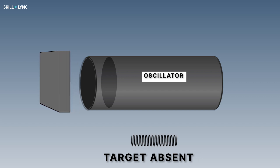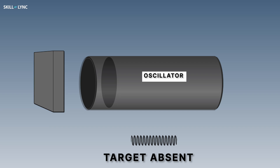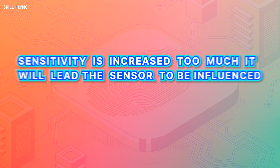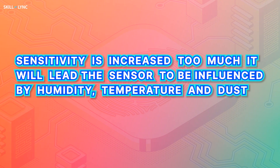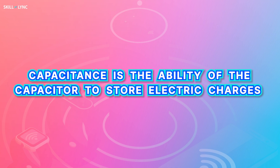This continues until it reaches a definite threshold. When the target plate is removed, the oscillator regains its original waveform. The sensitivity level of capacitance sensors can be adjusted, but if the sensitivity is increased too much, it will lead the sensor to be influenced by humidity, temperature, and dust.